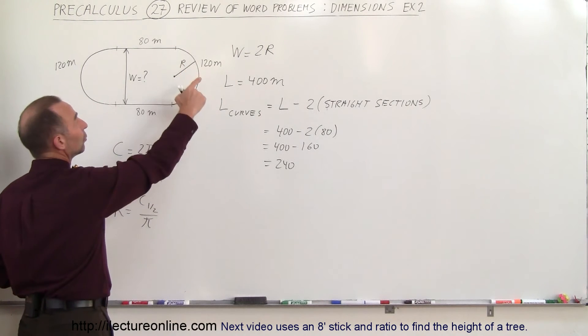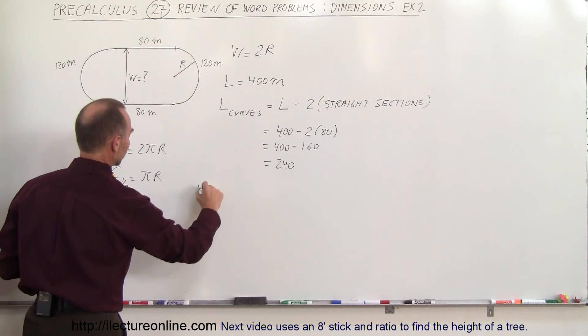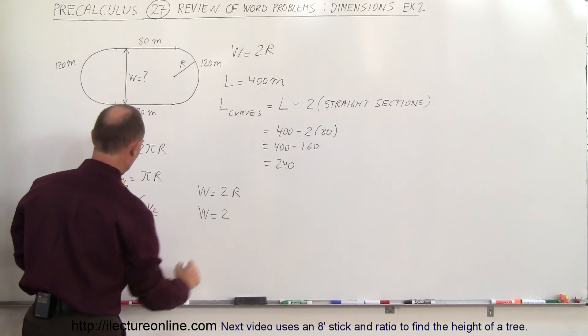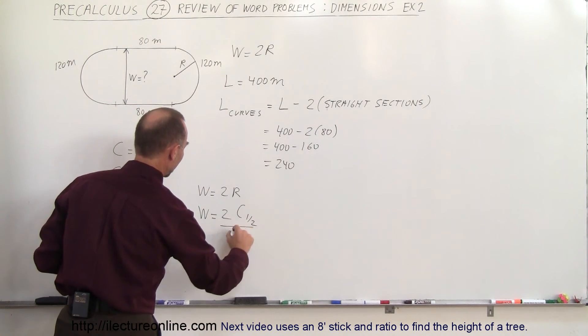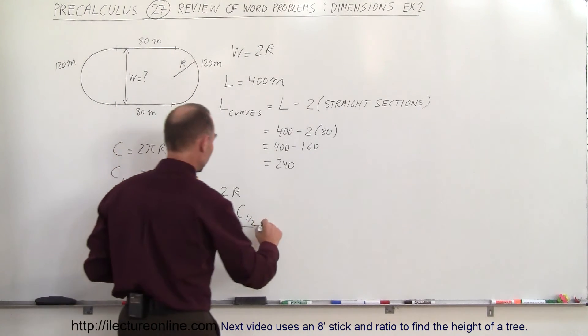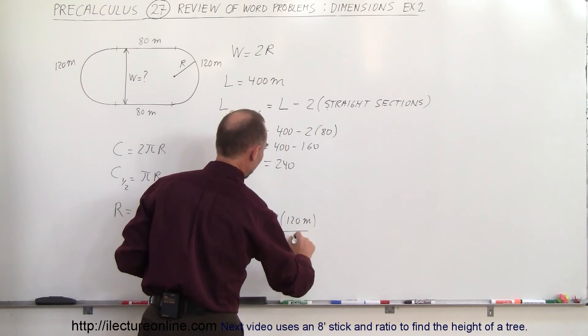Since we know that w equals 2r, that means the width is equal to 2 times half the circumference divided by π. In this case, that is equal to 2 times 120 meters divided by π.